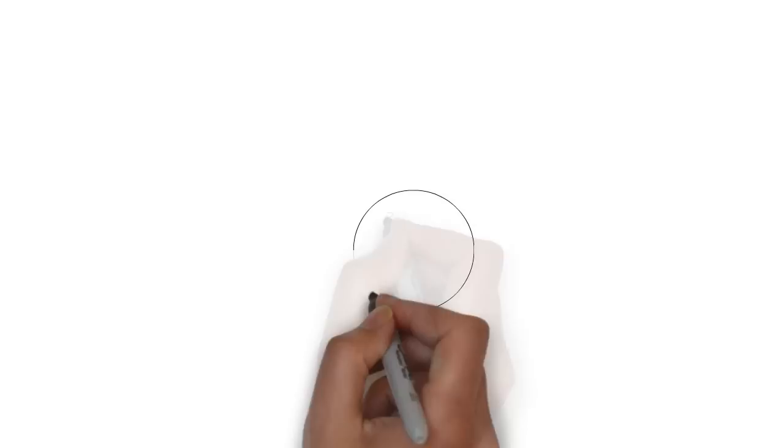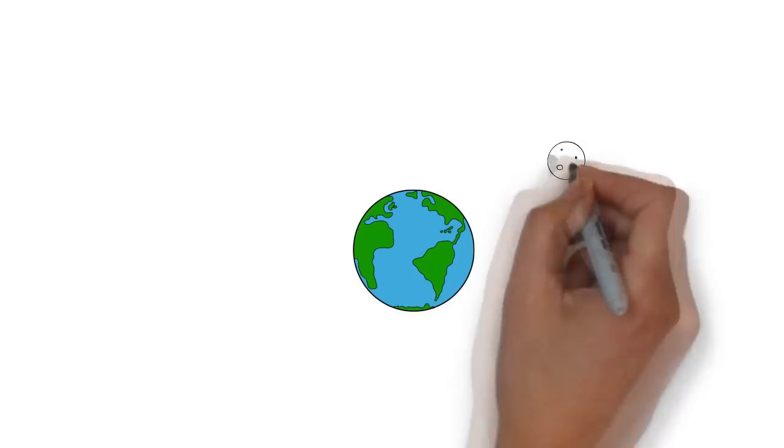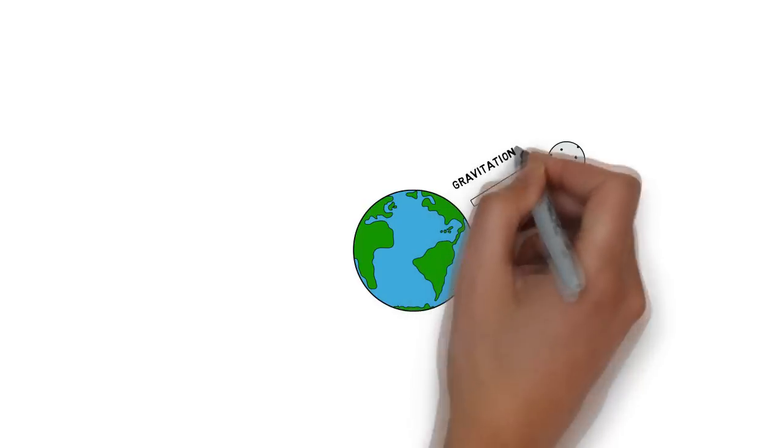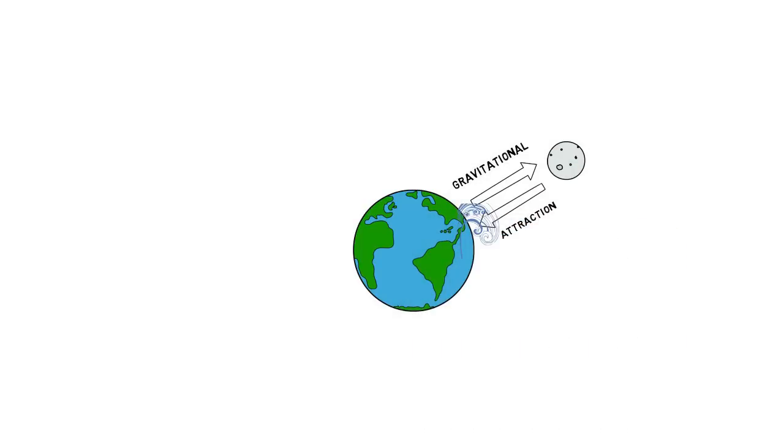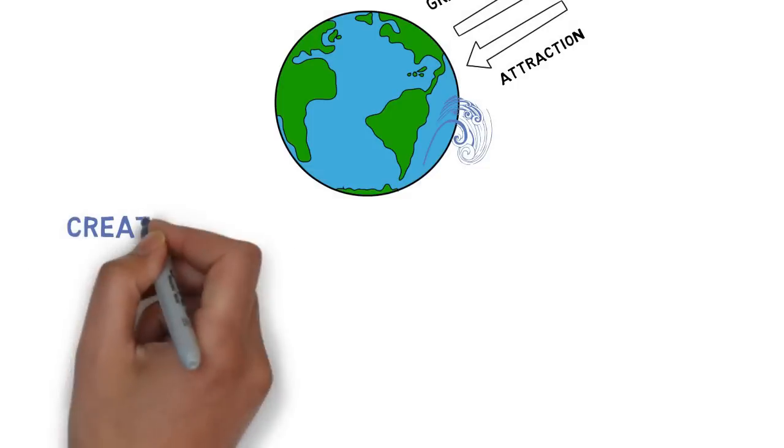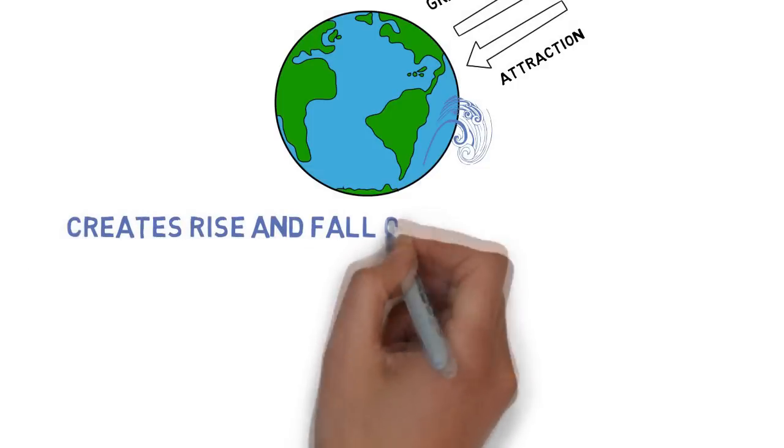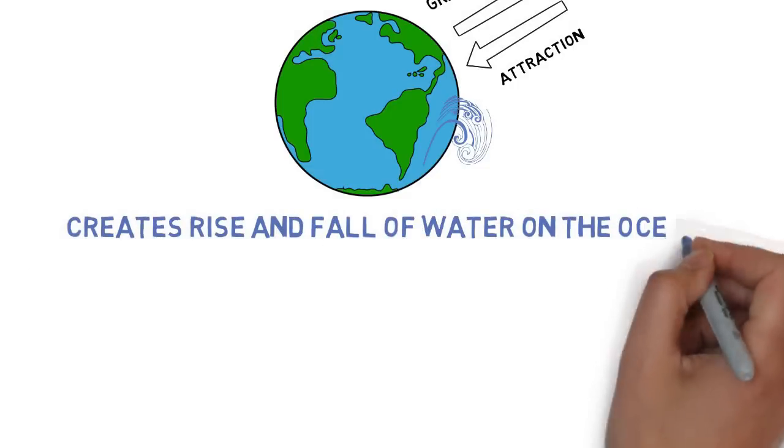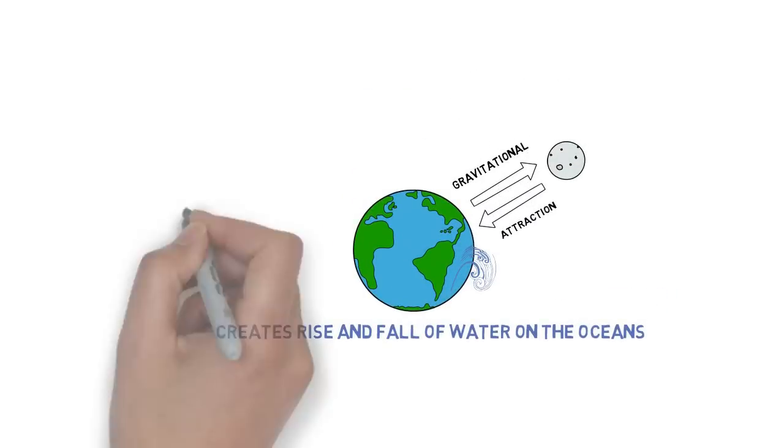Tides are caused by the gravitational interaction between the Earth, the Moon, and the Sun. The gravitational attraction of the Moon causes the water in the oceans to be pulled in the direction towards the Moon. This rising and falling of the water in the oceans caused by the gravitational attractions are called tides.